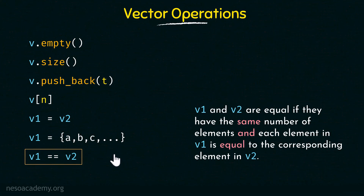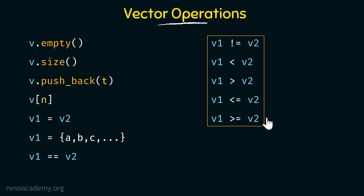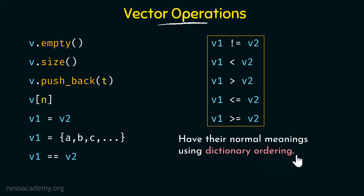We also have the remaining comparison operators: v1 != v2, v1 < v2, v1 > v2, v1 <= v2, and v1 >= v2. All of these have their normal meanings using dictionary ordering and are used to compare two vectors. Those were the basic vector operations you need to keep in mind while working with vectors. Thank you for watching and see you in the next one.